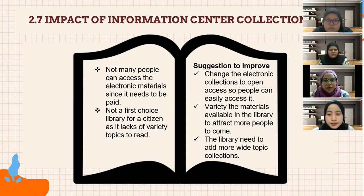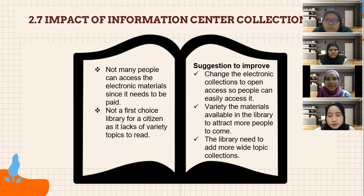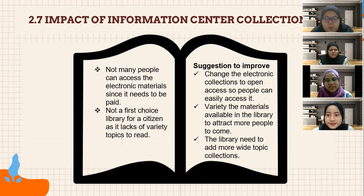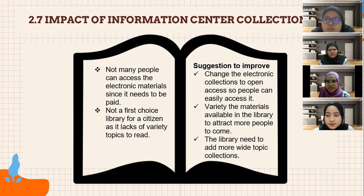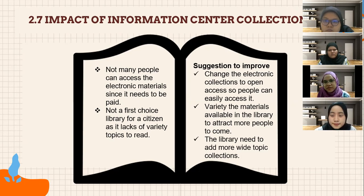Next is the impact of the information center collection at Cumberland. First, not many people can access the electronic materials since they need to be paid for. Second, the library is not a first choice for citizens as it lacks variety of topics to read. Suggestions for improvement: first, change the electronic collection to open access so people can easily access it; second, add variety to the materials available in the library to attract more people; third, the library needs to add more wide-topic collections.